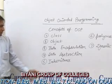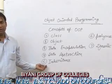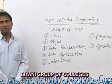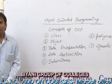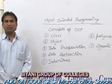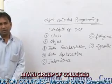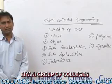Inheritance is done in OOP by five types: single inheritance, multiple inheritance, multi-level inheritance, hybrid inheritance, and hierarchical inheritance.